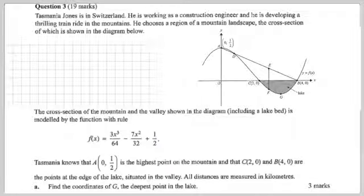Tasmania knows that A, which is this point here, is the highest point on the mountain and that C, now where's that? C here, 2 and 0, and B, 4 and 0, are the points at the edge of the lake situated in the valley. Okay, I think we've got all that. Alright, now let's go with it.